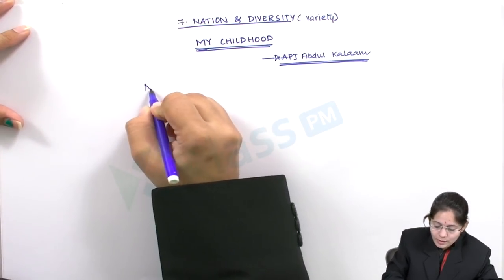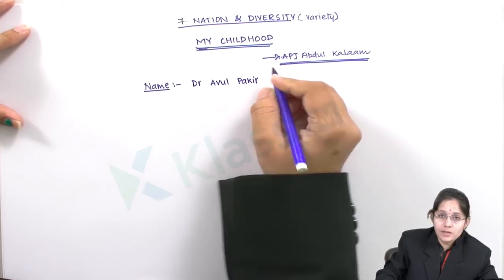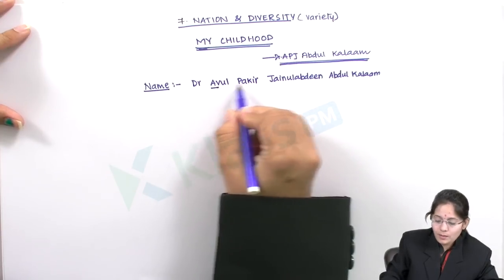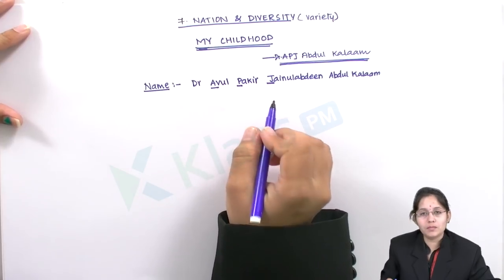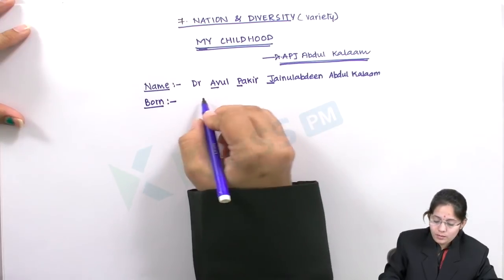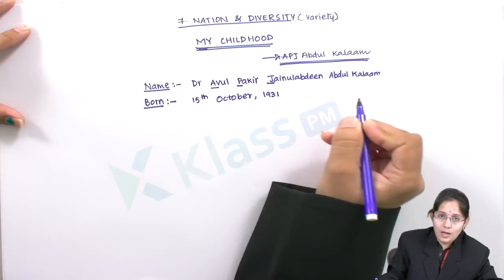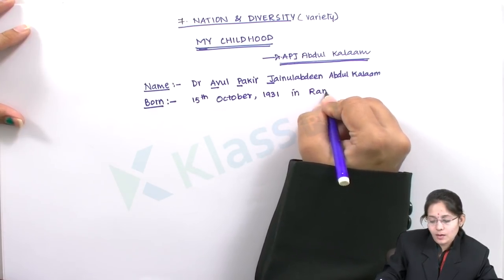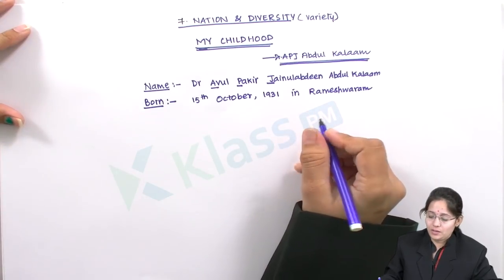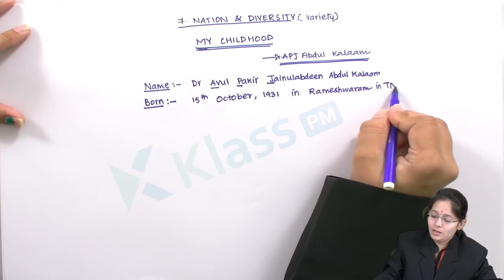His full name was Dr. Avul Pakir Jainulabdin Abdul Kalam. He was born on 15th October 1931 in a place called Rameshwaram, which was also earlier called the island town of Madras — present day Tamil Nadu.